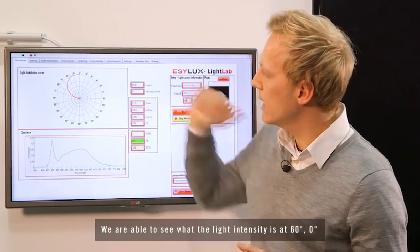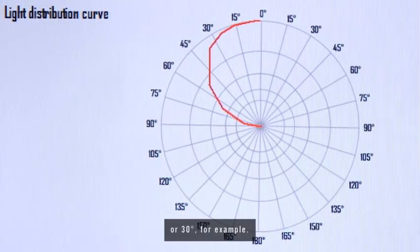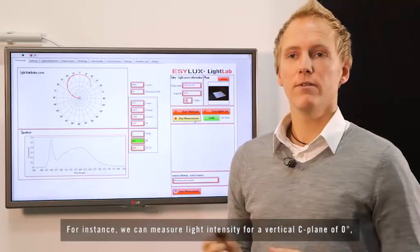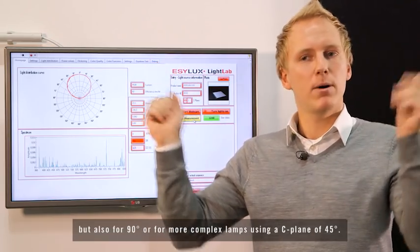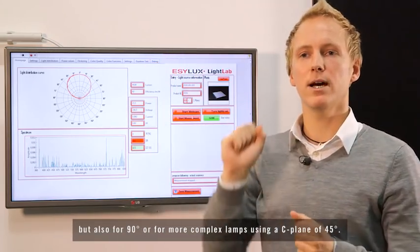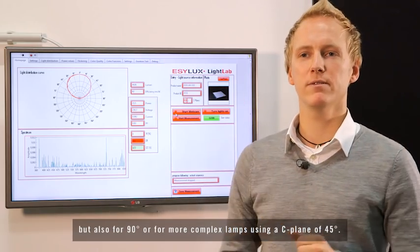Das heißt, wir sehen, wie viel Licht haben wir eigentlich bei 60 Grad, wie viel Licht haben wir bei 0 Grad, welche Lichtstärke kommt bei 30 Grad heraus. Und das, wenn wir wollen, für ein C-Plane, also vertikal von 0 Grad, aber auch für ein C-Plane von 90 Grad oder für komplexere Leuchten, die zum Beispiel bei 45 Grad gemessen werden müssen.